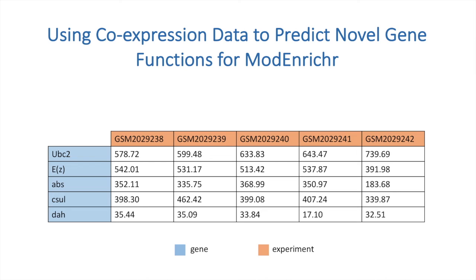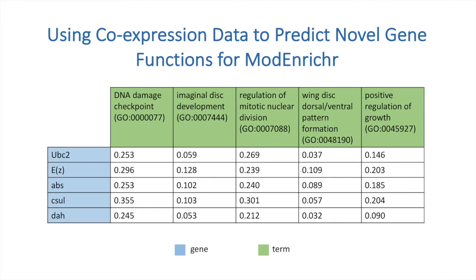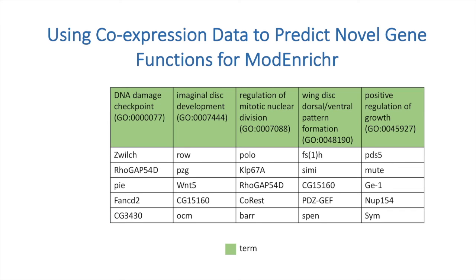Then, gene counts are normalized using quantile normalization. Next, normalized counts are used to create a gene-gene correlation matrix. The average correlation of a gene to each gene in an existing gene set is calculated for all genes. Then, the average correlations for each term are scaled using z-score. Finally, the z-scores are sorted in decreasing order, and the top-ranking genes are predicted to be associated with that term.